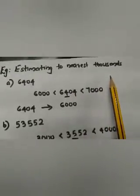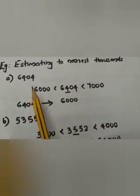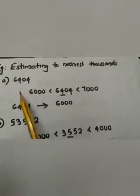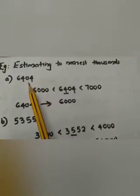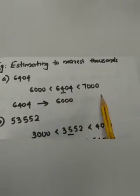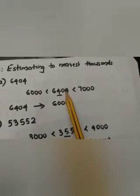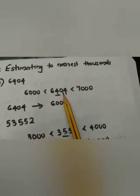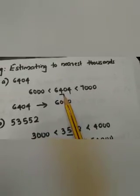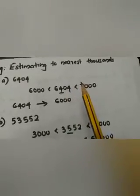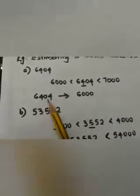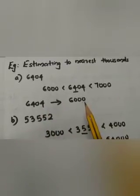Next we are estimating to nearest thousands. First example: 6,404. We need to round 6,404 to nearest thousands. Find out between which two thousands 6,404 lies — it lies between 6,000 and 7,000. For rounding off to nearest thousand, we are looking for the digit in the hundreds position. In the hundreds position, the number is 4. Remember: 1, 2, 3, 4 means rounding downwards, and 5 through 9 means rounding up. So 6,404 can be rounded to 6,000.